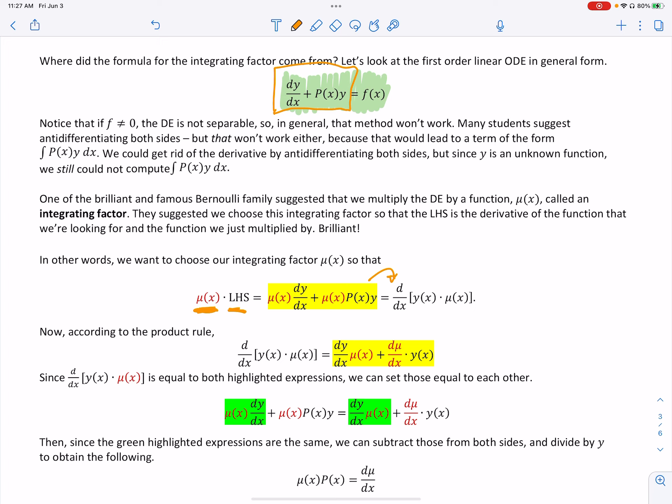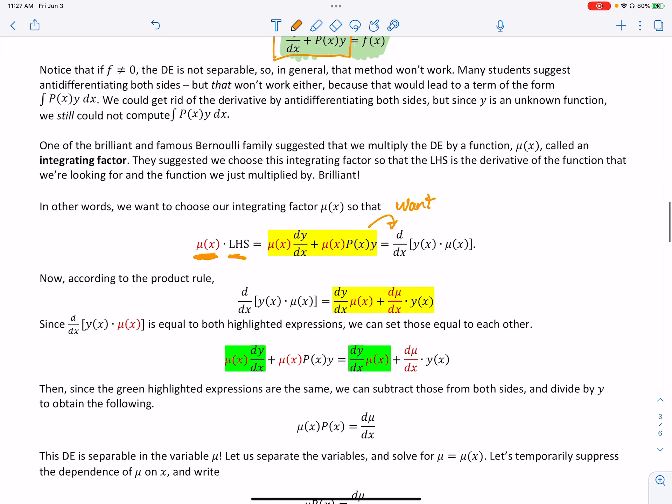Now, we are forcing this. We want that to happen. Again, I want the product rule of y and mu, whatever mu is, we're trying to figure out what would mu be then. I want it to be the product rule between the two. So I know that we're going to force this. So we want that, so we're going to force the highlighted part to be equal to the product rule. Now, according to the product rule, though, if I just use the product rule and I work it out, this is just definition. I get that.